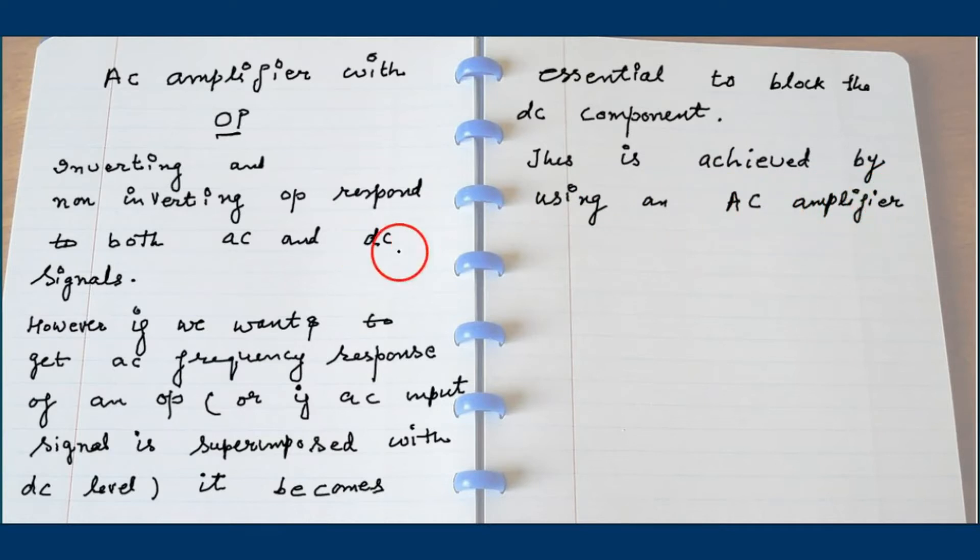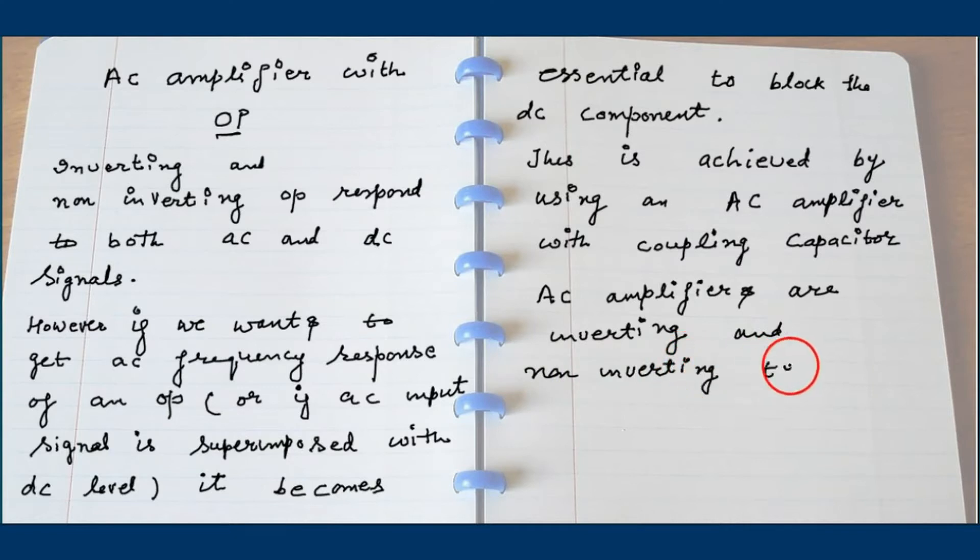This can be done by using operational amplifier with coupling capacitor. So AC amplifiers are inverting and non-inverting type, so let's first go for the inverting.